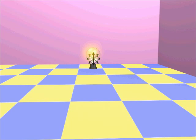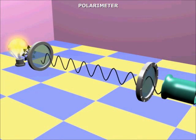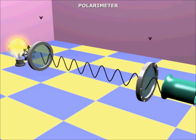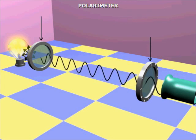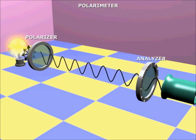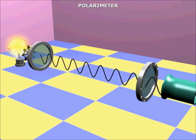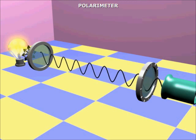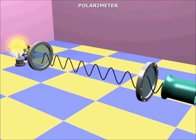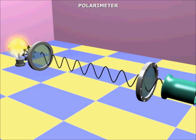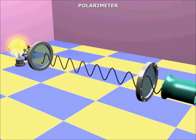Now we will pass this unpolarized light through a device called a polarimeter. The polarimeter contains two polaroid filters. This one is called the polarizer and this one is called the analyzer. When the light passes through the polarizer, then only one vibrating plane of the light wave is allowed to pass through it. The other vibrating planes are completely or partly absorbed.